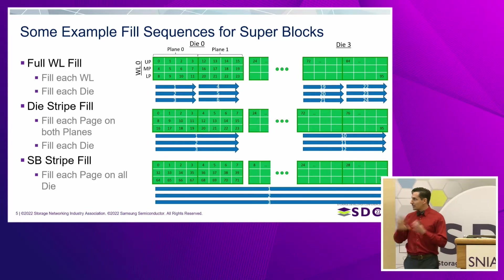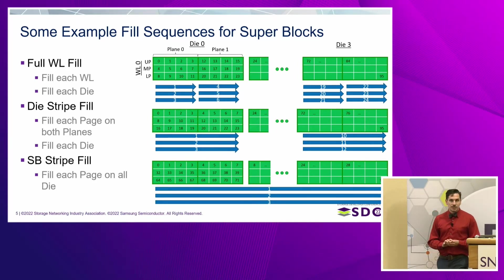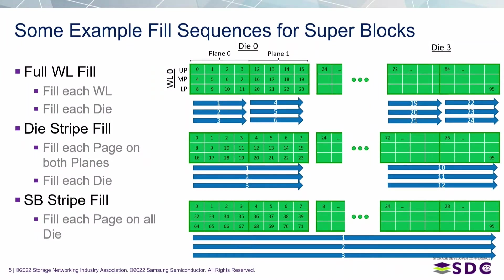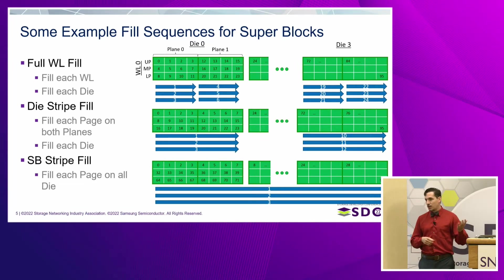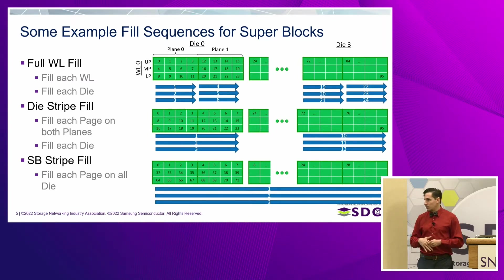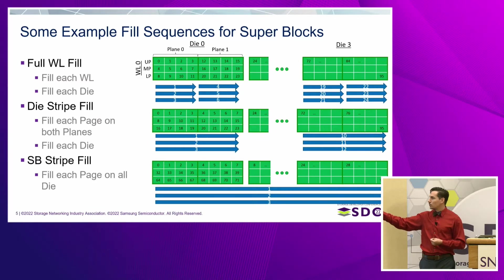I have three example fill sequences — these are just examples I use because they're easy, not necessarily the most common. The full word line fill: if we hypothetically erased everything and start writing at LBA zero, you could number upper page sectors 0, 1, 2, 3 aligned with 4K sector size. But as NAND programs, we're actually filling in the same sequence even if you wrote randomly, so it's not necessarily LBA-correlated.